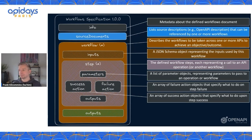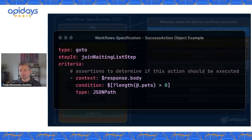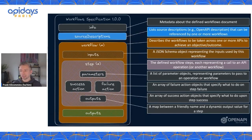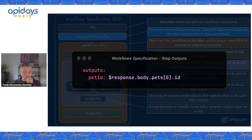Success objects are very similar to failure objects — just things to do based on certain success criteria of the step itself. Looking at this particular scenario, it has a type go-to and determines the step we should go to if we're matching the particular criteria in the current step. Outputs are nothing more than a map object between a friendly name and a dynamic output value that we want to make available within the context of the workflow for subsequent steps. Here we're defining an output of a pet ID and injecting a value determined based on a runtime expression.